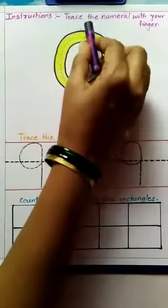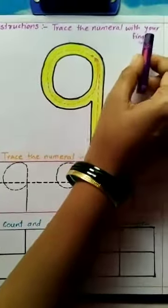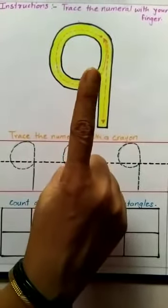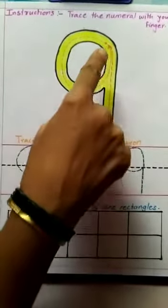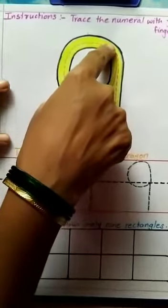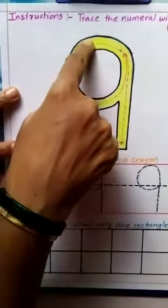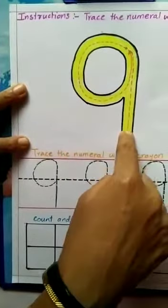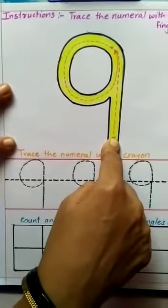Instructions are trace the numeral with your finger. Take your pointer finger and then keep it here. And start tracing like this. A circle and a standing line. Number 9.